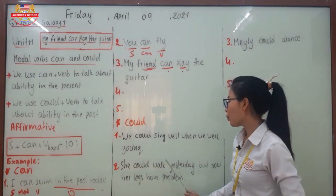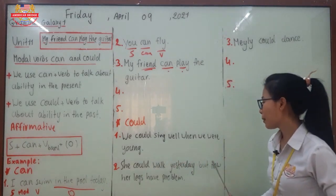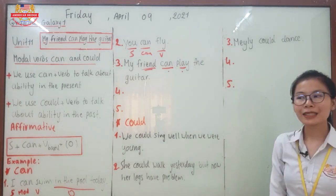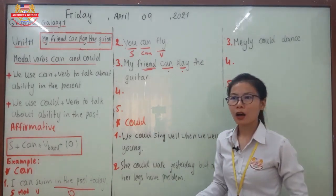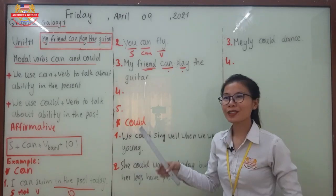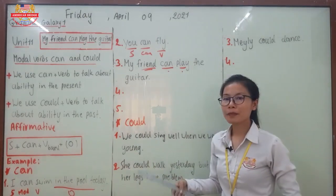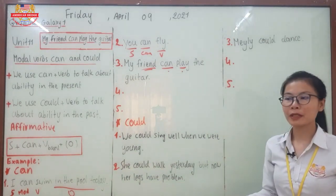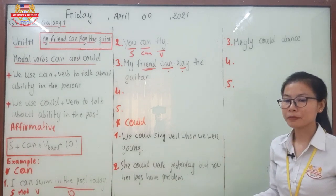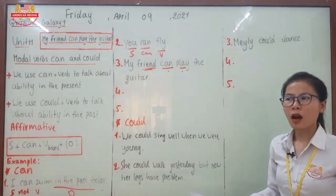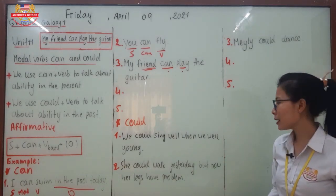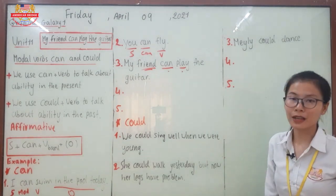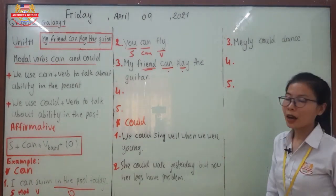Number two: 'She could walk yesterday, but now her legs have a problem.' This means that yesterday she had the ability to walk, but today, perhaps because of a broken leg or an accident, she cannot walk well anymore.